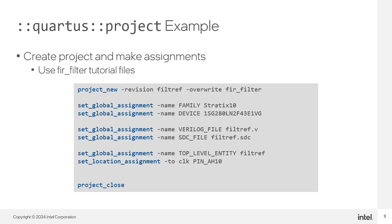The script uses the set_location_assignment to assign the signal name Clock to pin AH10, a Global Clock pin on the Intel Stratix 10 device. Depending on device support, you can also assign signals to IO banks, locations, and edges of the device. Finally, the project_close command commits all assignments to the Intel Quartus Prime Software Settings file and closes the project. Now the project has been created and assignments have been made.